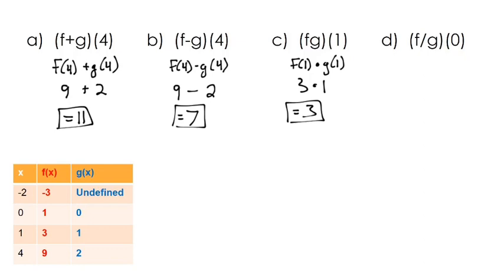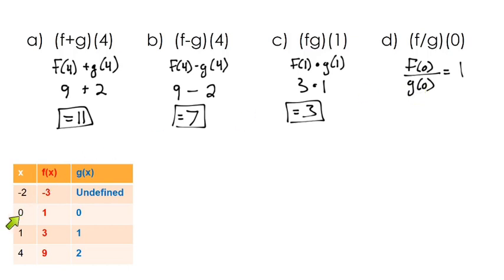Lastly for the table, we do function division: f of 0 divided by g of 0. The f function when x is 0 has a value of 1, and the g function when x is 0 has a value of 0. So this is 1 divided by 0, which is not 0 — 1 divided by 0 is undefined. Any time you divide by 0, you get an undefined value.